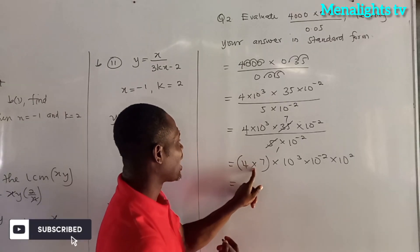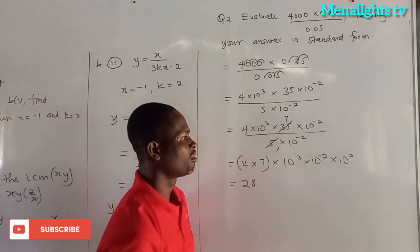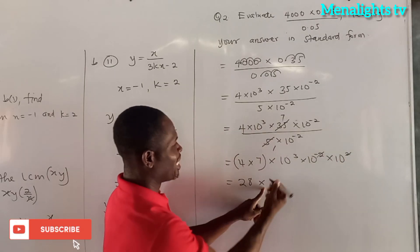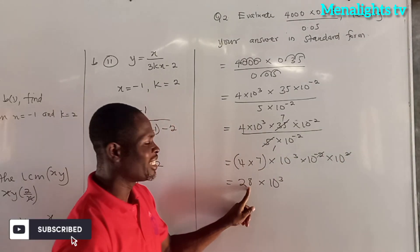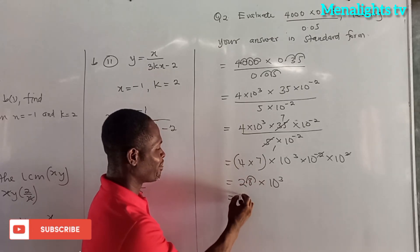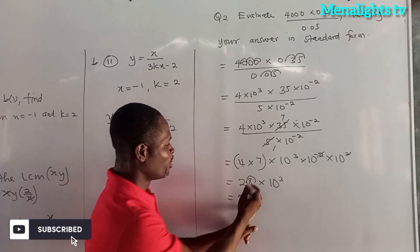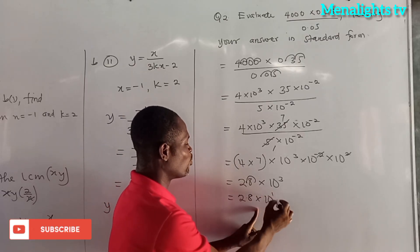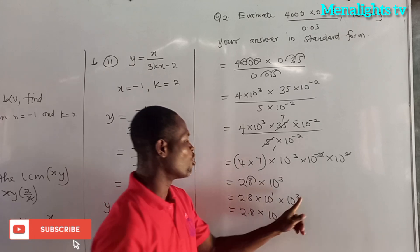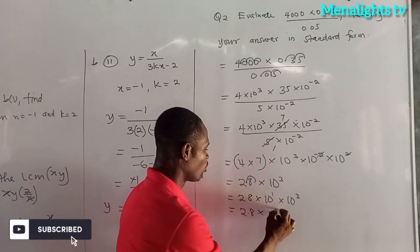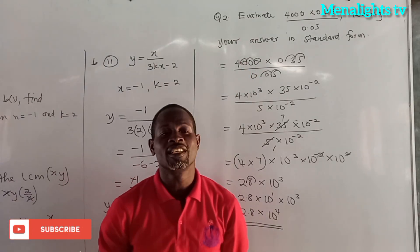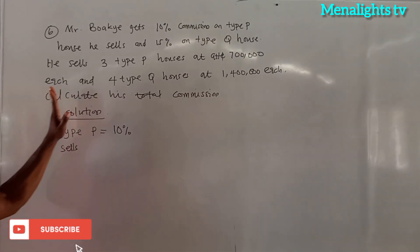So we have 4 × 7 × 10^3 × 10^(−2) × 10^2. The 10^(−2) and 10^2 cancel each other. That leaves 28 × 10^3. Since 28 is more than 10, we move one decimal step: 28 = 2.8 × 10^1. So 2.8 × 10^1 × 10^3 = 2.8 × 10^4. The final answer in standard form is 2.8 × 10^4.